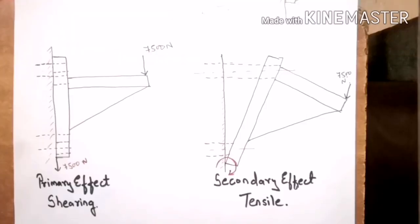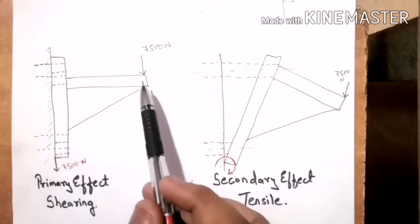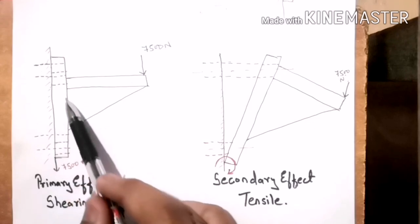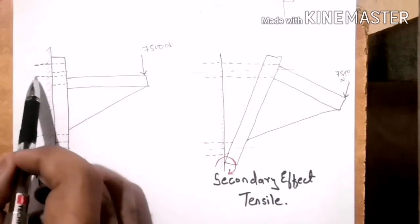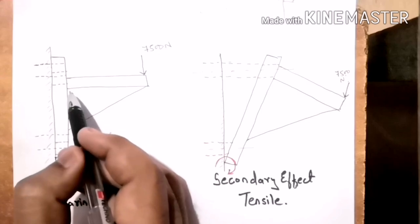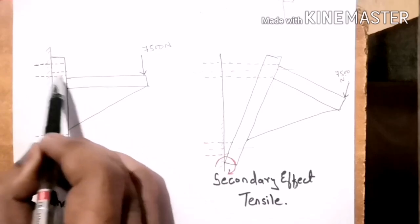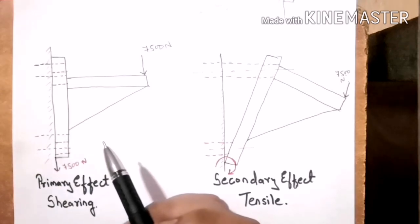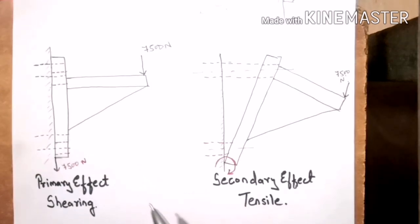Consider a bracket mounted to a wall by means of a bolt system as shown in the figure. If you carefully look at the load, this load W will try to shear off the bolts. The bolts mounted on the wall will experience a shearing effect. The initial position of the bolt shifts after shearing. Hence, we can say the primary effect of the load is shearing on the bolts.